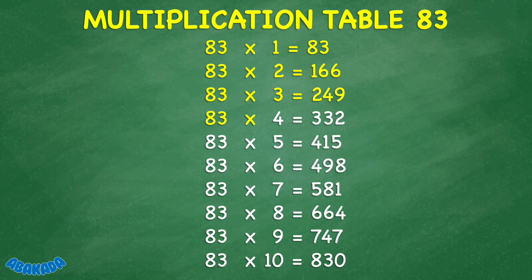83 times 4 equals 332. 83 times 5 equals 415. 83 times 6 equals 498. 83 times 7 equals 581. 83 times 8 equals 664. 83 times 9 equals 747. 83 times 10 equals 830.